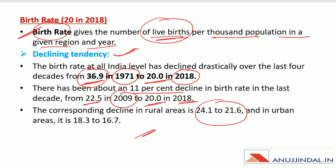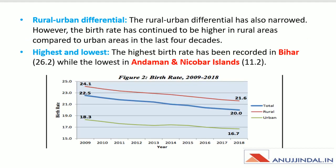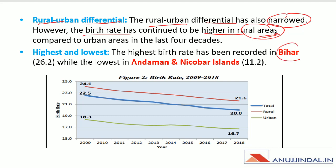The corresponding decline in rural areas was from 24.1 to 21.6, while in urban areas it was from 18.3 to 16.7. The rural-urban differential has narrowed; however, the birth rate continues to be higher in rural areas. The highest birth rate is in Bihar at 26.2, while the lowest is in Andaman and Nicobar Islands at 11.2.